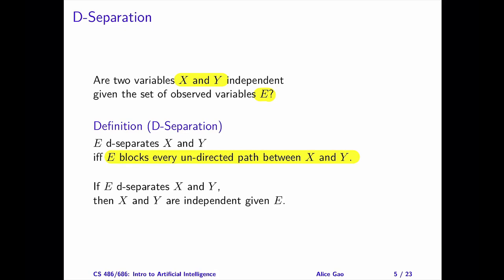To determine whether X and Y are independent given the observed variables E, we can verify whether E D-separates X and Y. If D-separation holds, then the independence relationship holds as well.